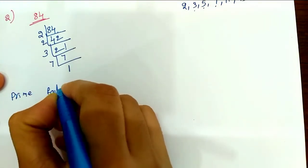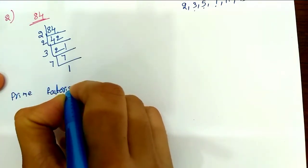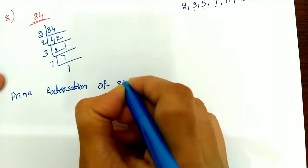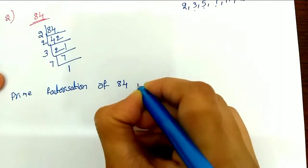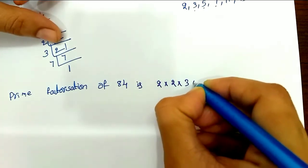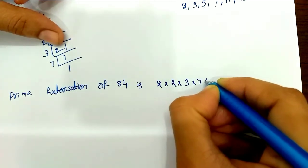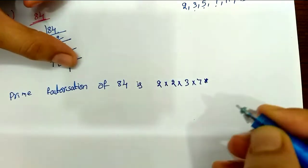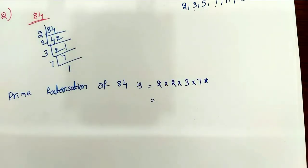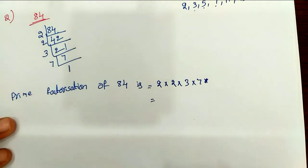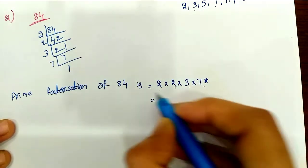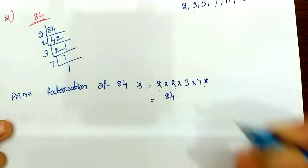The prime factorization of 84 is 2 × 2 × 3 × 7. Verification: 2 times 2 is 4, 4 times 3 is 12, 12 times 7 is 84. So the answer is 84.